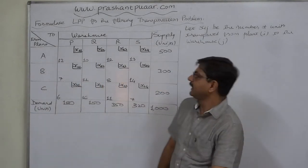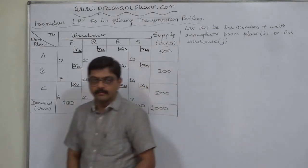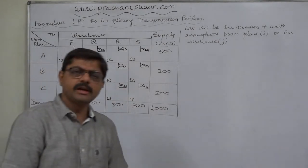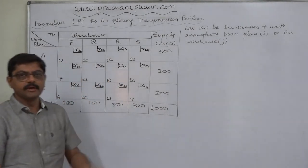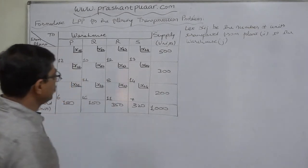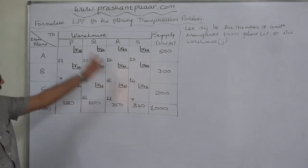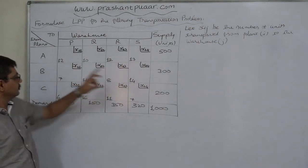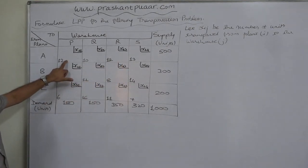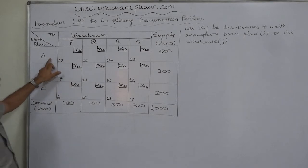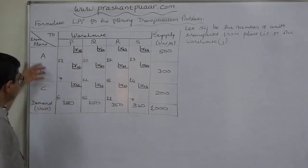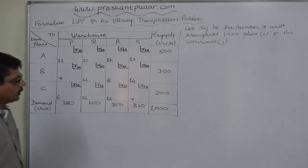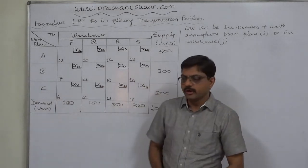Hello friends, welcome. Let us take an example of a transportation problem for which we are going to formulate an LPP, or linear programming problem. We had already discussed this theoretically in our video lecture number 2, but here we are going to take a practical case. These are the transportation costs per unit for transporting one unit from a particular plant to a particular warehouse. There are three supply points and four demand points.